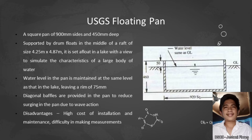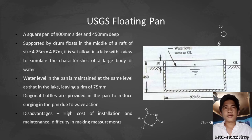The USGS floating pan is a square pan of 900 millimeter sides and 450 millimeters deep, supported by drum floats in the middle of a raft measuring 4.25 meters by 4.87 meters. It is set afloat in a lake to simulate the characteristics of a large body of water. The water level in the pan is maintained at the same level as the lake, leaving a rim of 75 millimeters. Diagonal baffles are provided to reduce surging due to wave action.